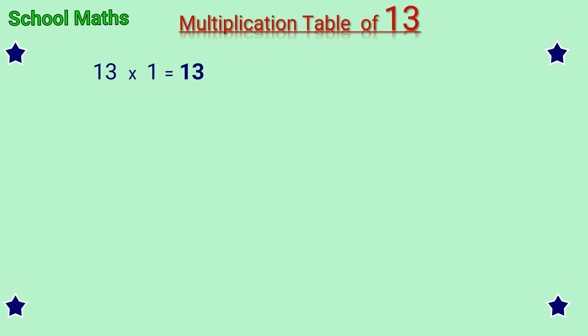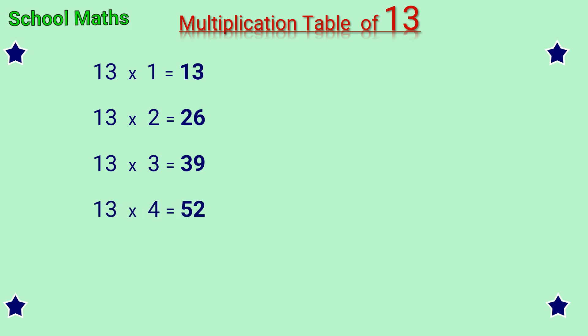13 ones are 13, 13 twos are 26, 13 threes are 39, 13 fours are 52, 13 fives are 65, 13 sixes are 78.